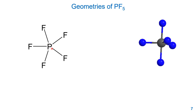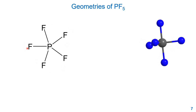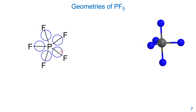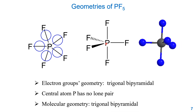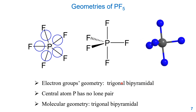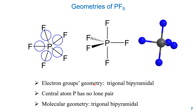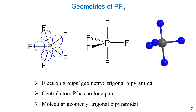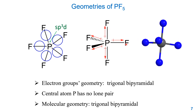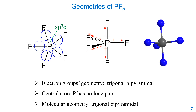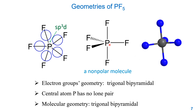Phosphorus pentafluoride has a central atom phosphorus with five electron groups — five single bonds. The electron group geometry is trigonal bipyramidal. Since phosphorus has no lone pair, the molecular geometry is also trigonal bipyramidal. The central atom is sp3d hybrid. Each P–F bond is polar, but all dipole moments cancel each other, so PF₅ is a nonpolar molecule even though it contains polar bonds.